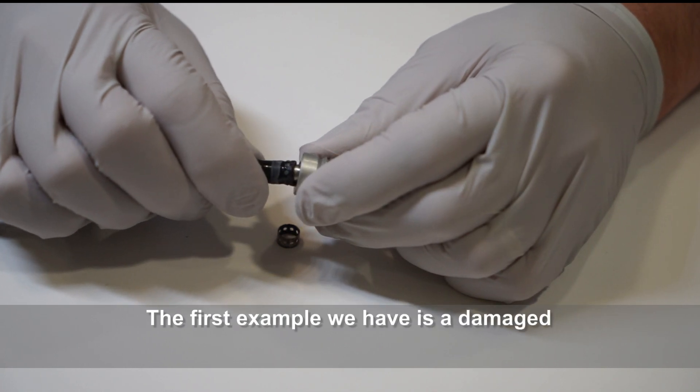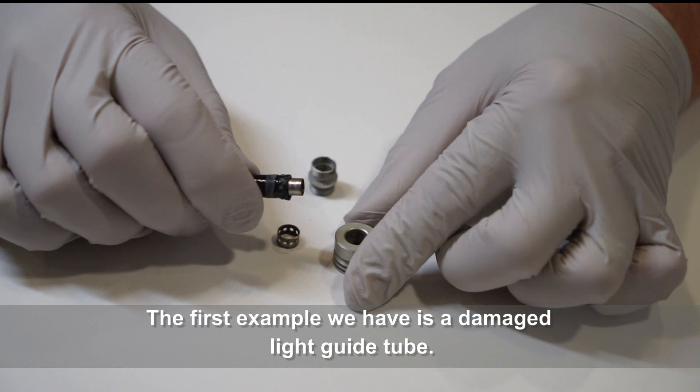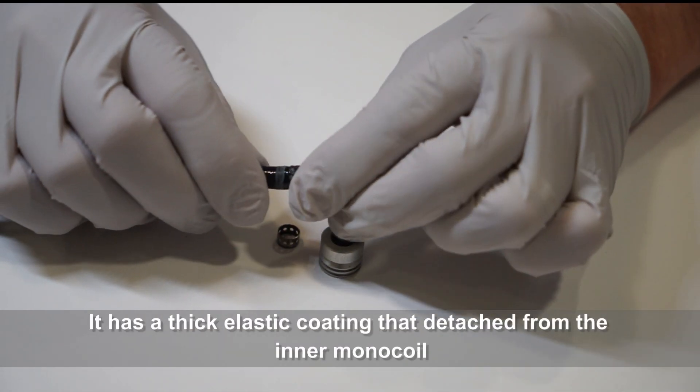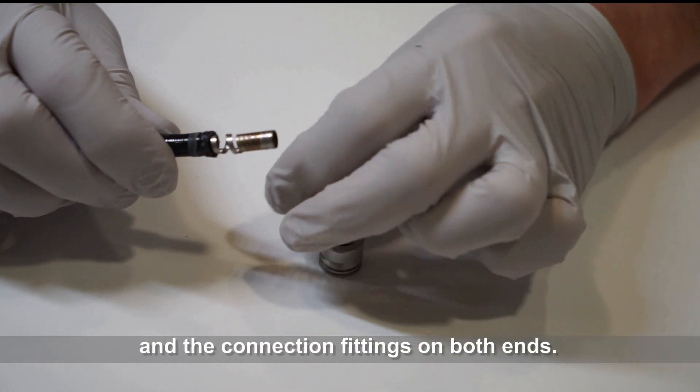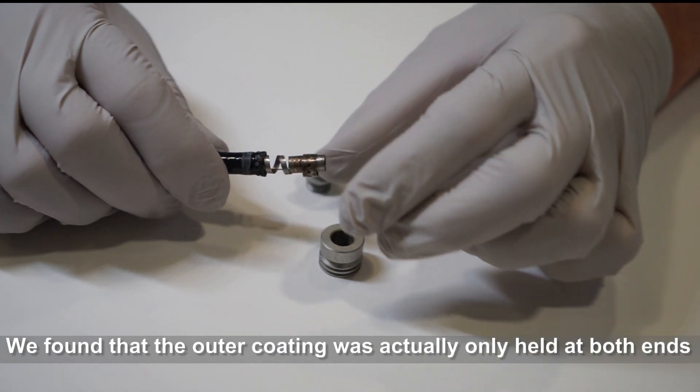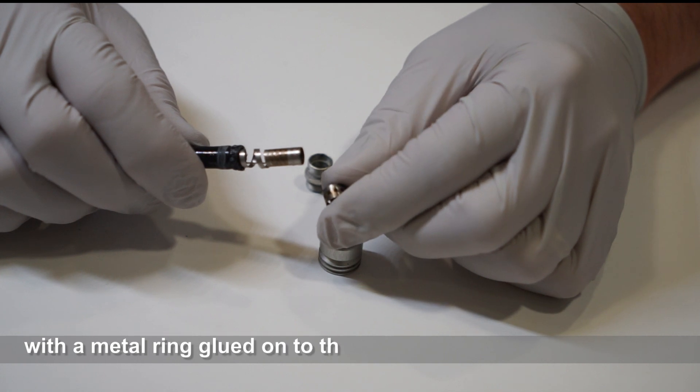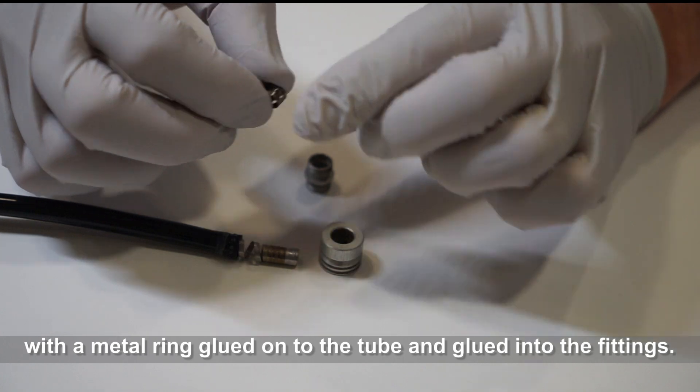The first example we have is a damaged light guide tube from Astoris 11272VN. It has a thick elastic coating that detached from the inner monocoil and the connection fittings on both ends. We found that the outer coating was actually only held at both ends with a metal ring glued onto the tube and glued into the fittings.